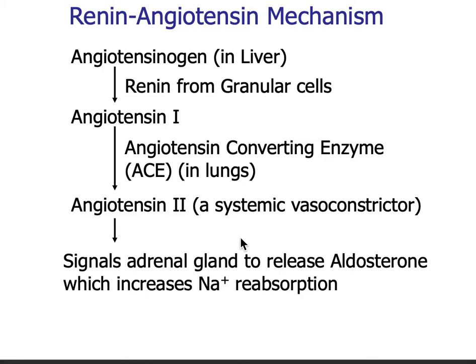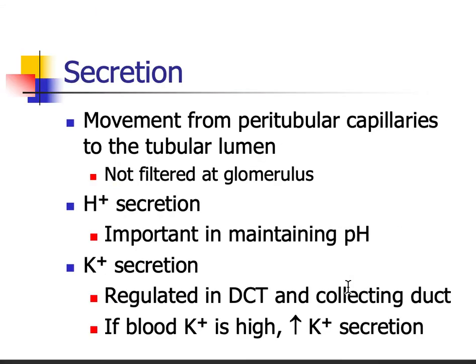So we have two mechanisms of blood pressure increase from this system. That tells you renin is only released when blood pressure is too low. The kidneys' granular cells detect that blood pressure is low, release renin, and through the cascade, blood pressure increases.